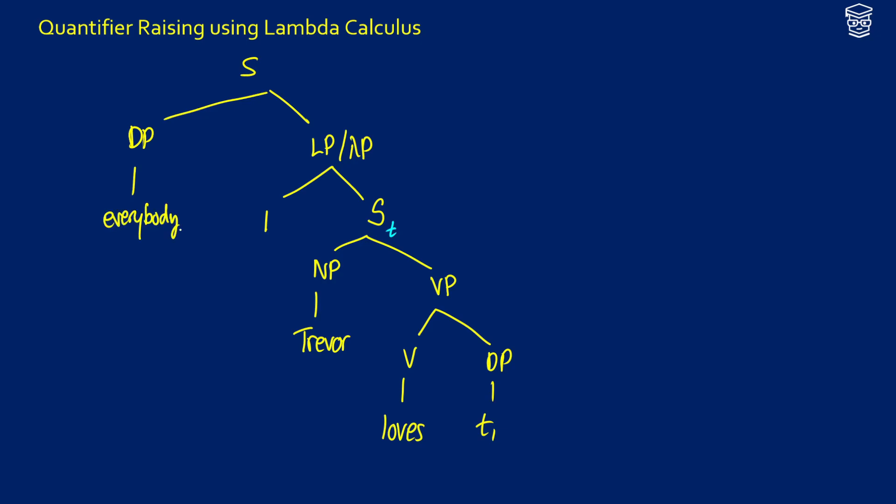Then we're going to create the new S with the determiner phrase where everybody gets moved to. We're going to be able to do abstraction to make this an ET and then fit this in with an ETT to force this to be a T at the sentence level. So S's will always be type T's.